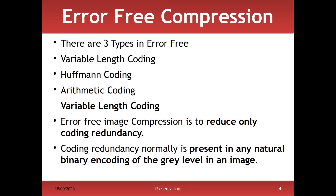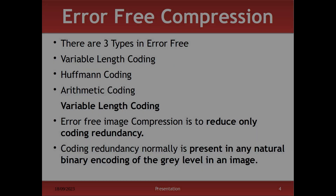There are three different types of error-free compression. The first one is variable length coding. The second one is Huffman coding. The third is arithmetic coding. Variable length coding reduces the image size by identifying coding redundancy — redundancy means repeatedly occurring patterns or symbols — and reducing them. This coding redundancy is normally present in any natural binary encoding of the gray level of the image.